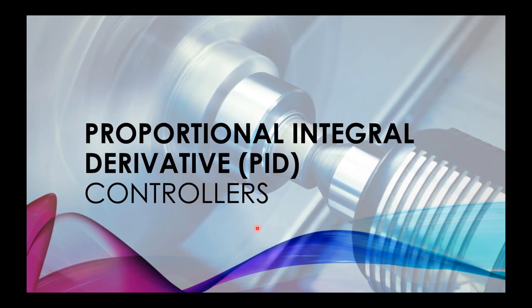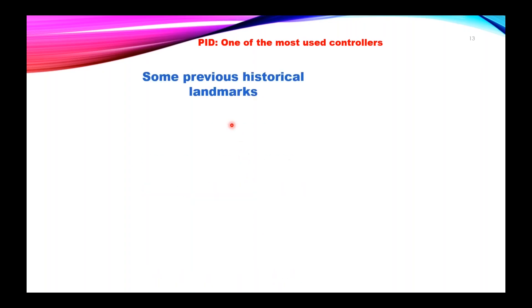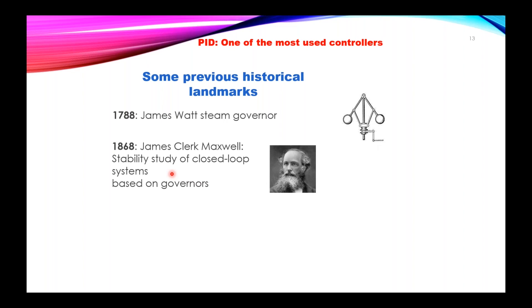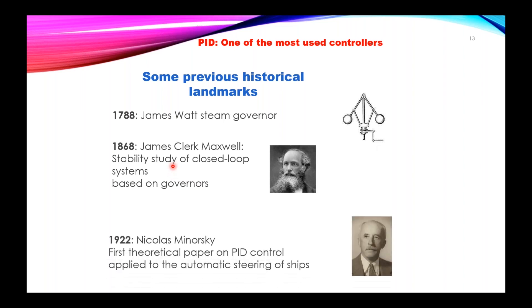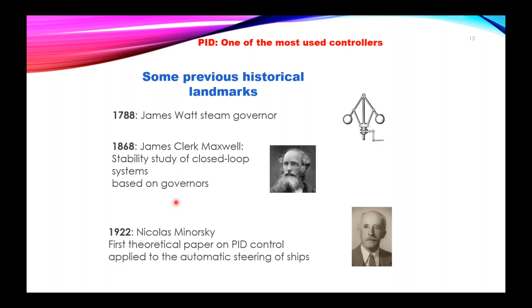Now we talk about the well-known PID controller — proportional, integral, and derivative. The PID controller is probably one of the most used controllers in industry, robotics, servos, and so on. Some historical landmarks include the steam governor by James Watt in the 18th century, the stability study of closed-loop systems by James Clerk Maxwell in 1868, and the first theoretical paper on PID control applied to automatic steering of ships, published by Nicholas Minorski in 1922, almost 100 years ago.